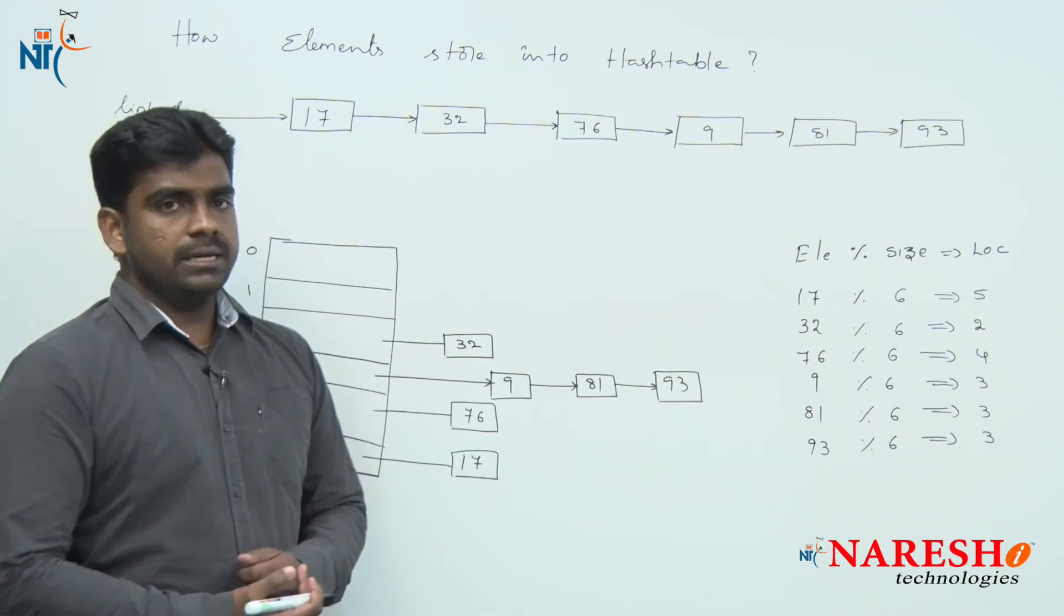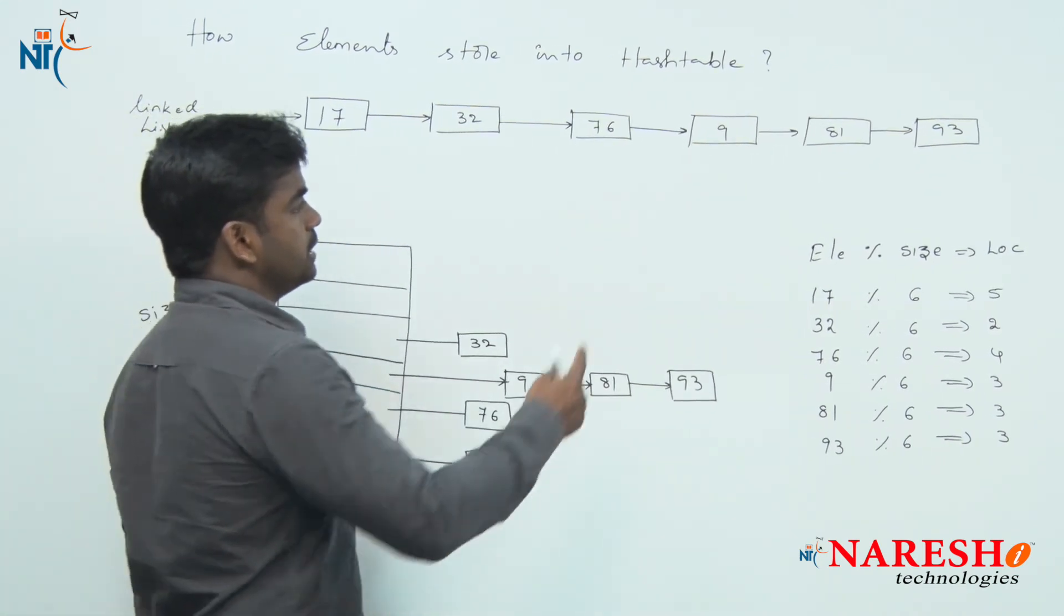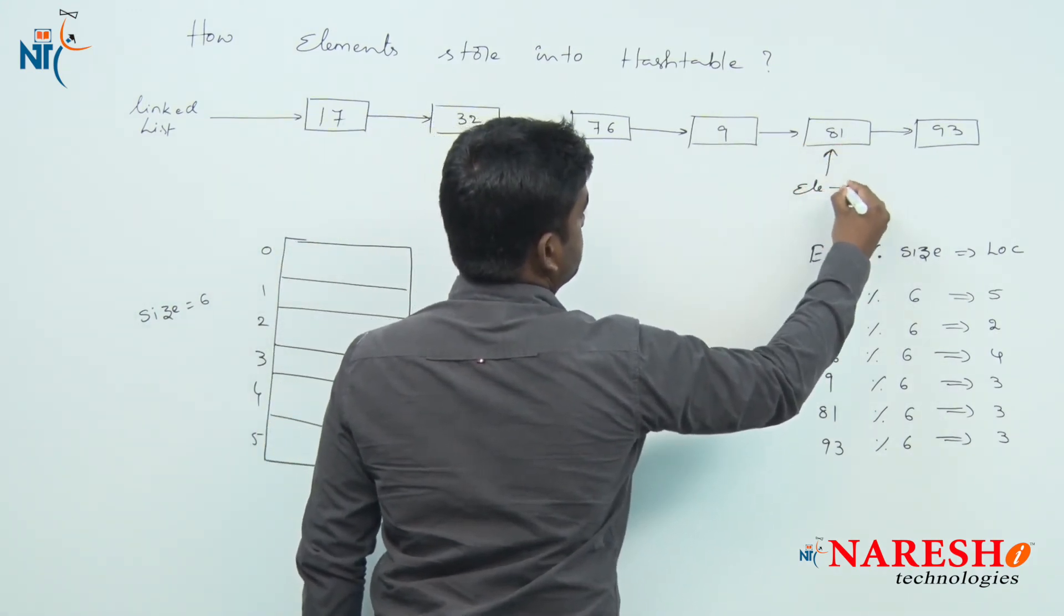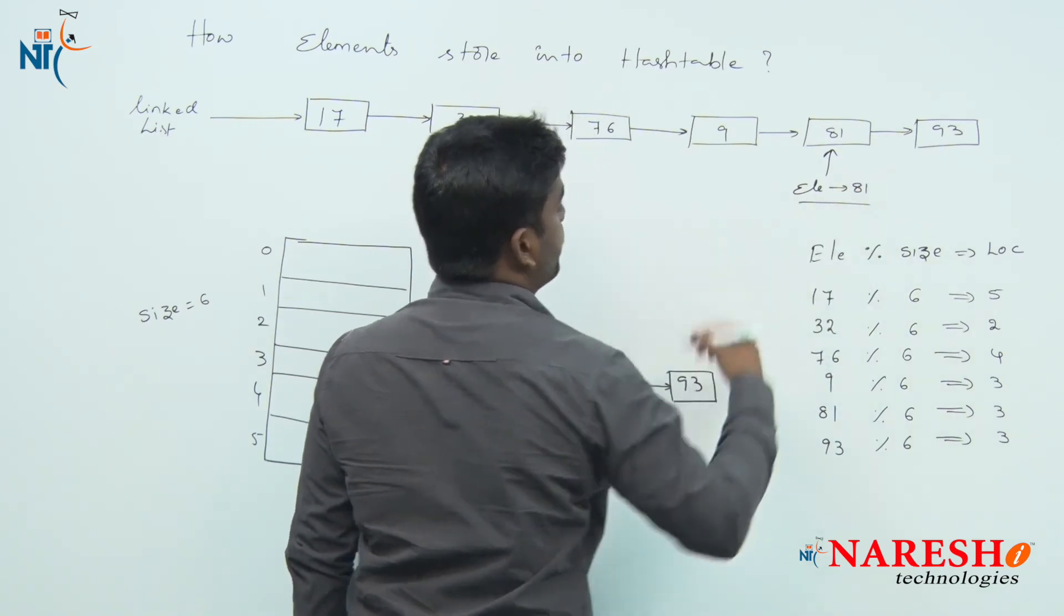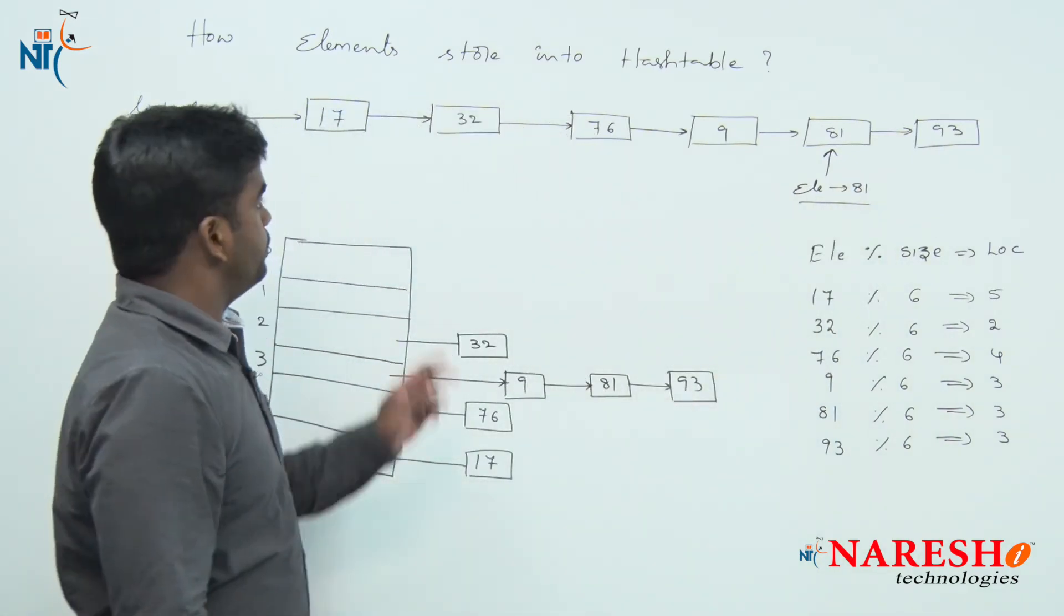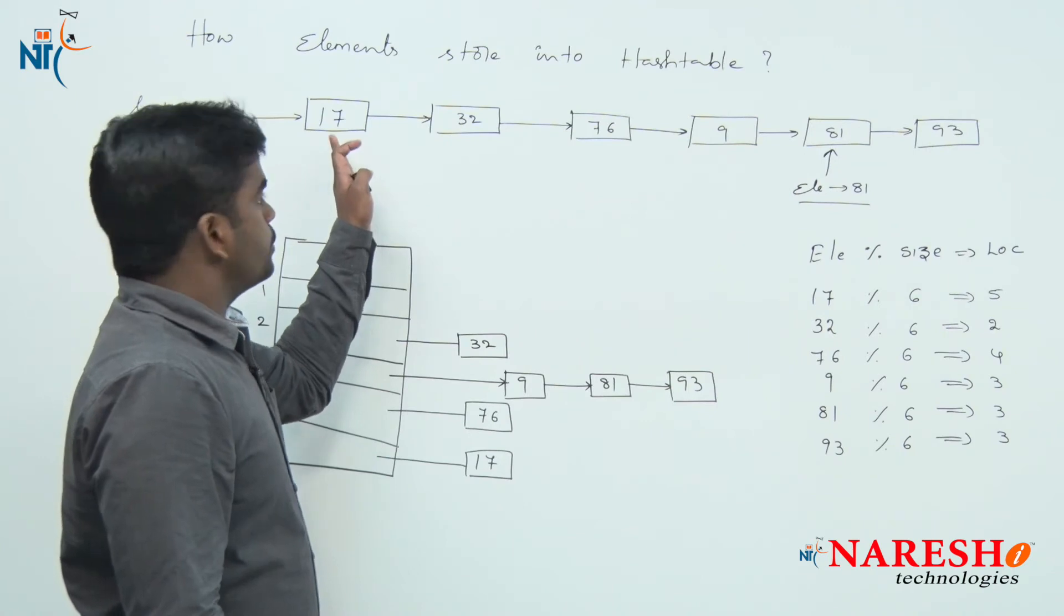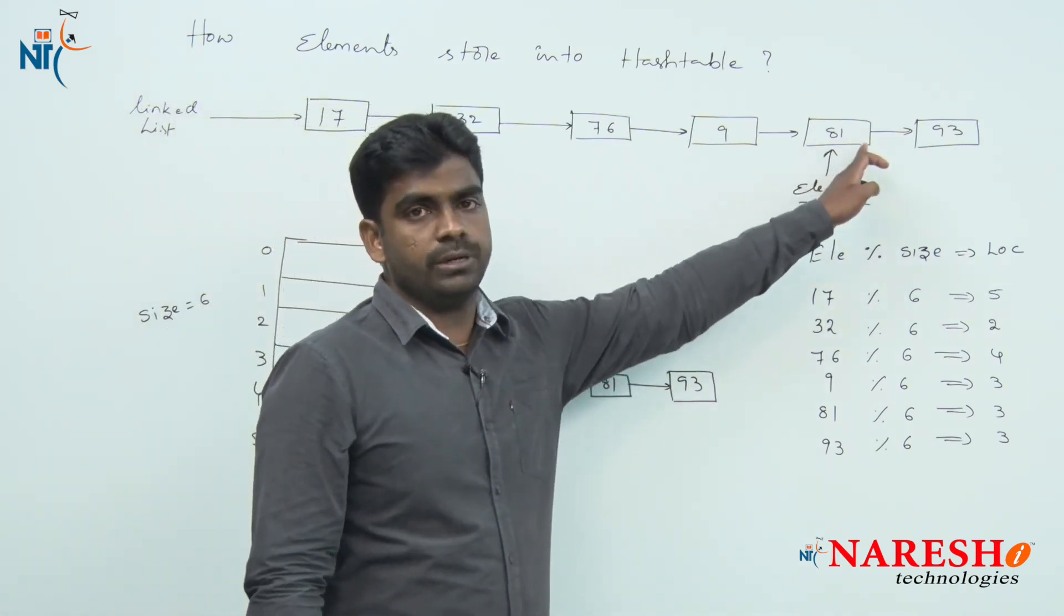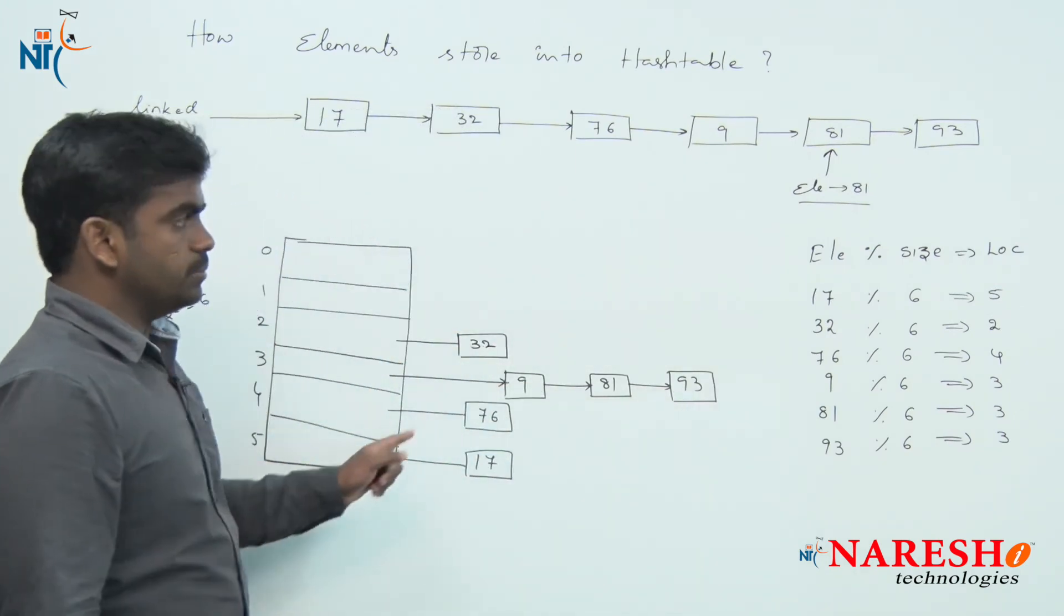So what is the advantage? For example, here in the linked list I want to search for the element 81. From the first location, we should travel node by node and somewhere you will get it.